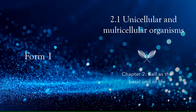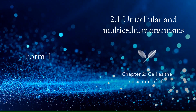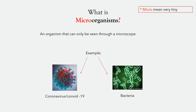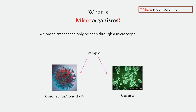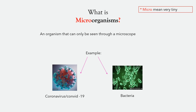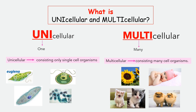Today we're going to learn about unicellular and multicellular organisms. What does 'micro' mean? Micro means very tiny. What is a microorganism? A microorganism is an organism that can only be seen through a microscope, like coronavirus and bacteria. What is unicellular and multicellular? 'Uni' means one, 'multi' means many. Unicellular means an organism with only one cell.